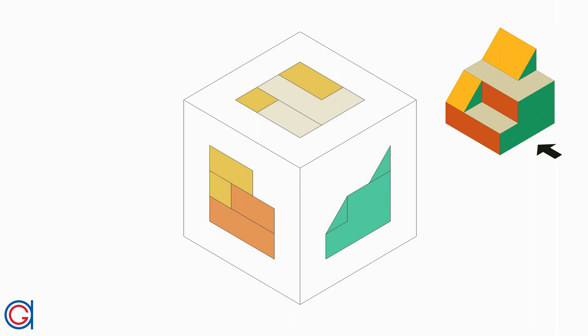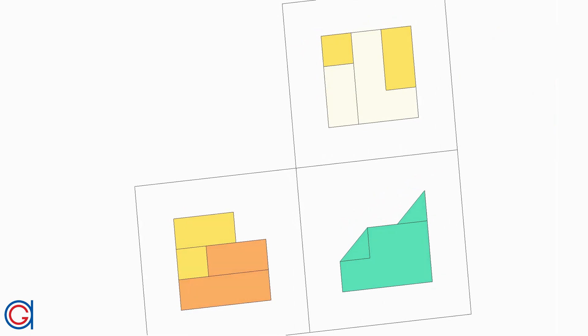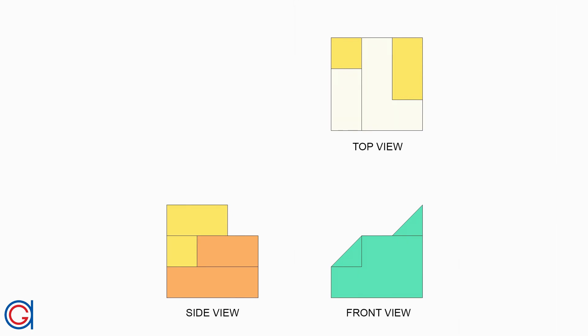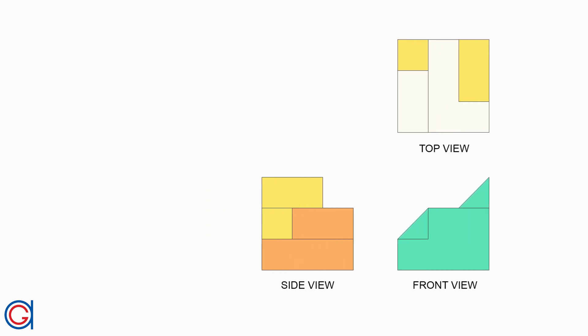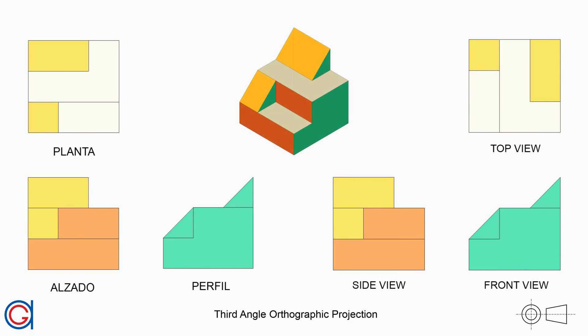Now imagine another case where the arrow indicates the right part of the object. In this case when we cut the three faces we are going to do it along the top left edge and open these three faces out to a two-dimensional shape. This time the top elevation is rotated 90 degrees clockwise and placed above the new front elevation, which is the right view. In this case the side elevation or side view is located on the left. Once you understand spatially how this system of views works, you will be able to face the orthographic representation of any object without any difficulty.